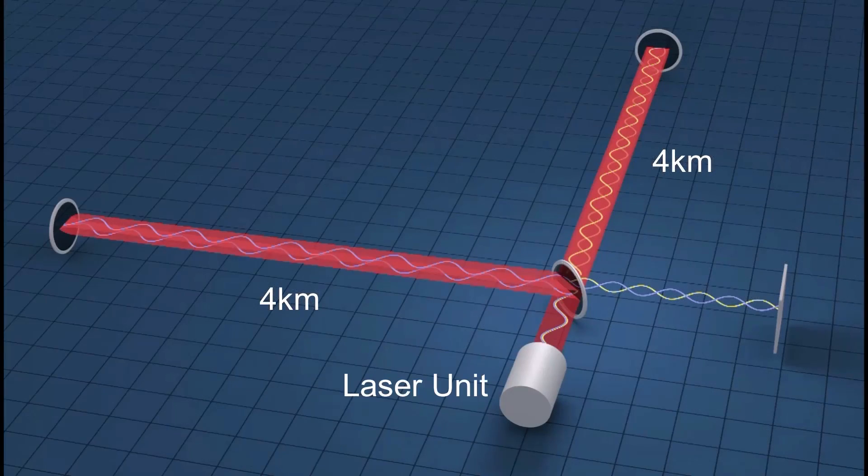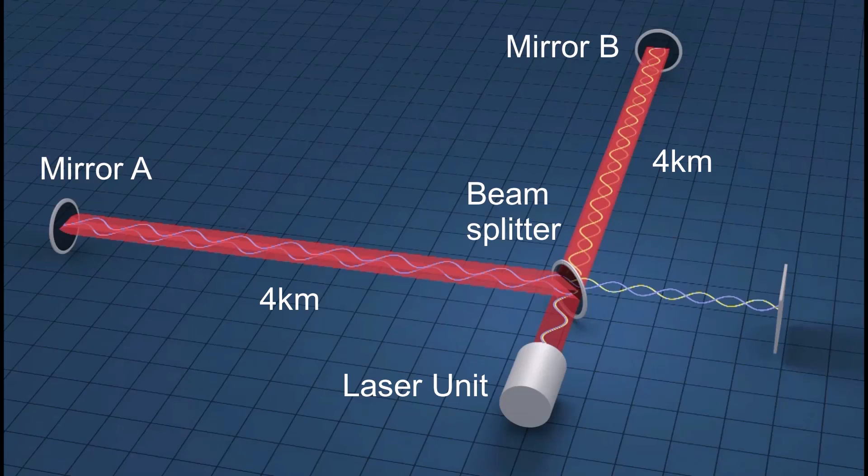The laser light is generated and divided between both arms, then reflected on the mirror at each arm and directed again to the detector unit.